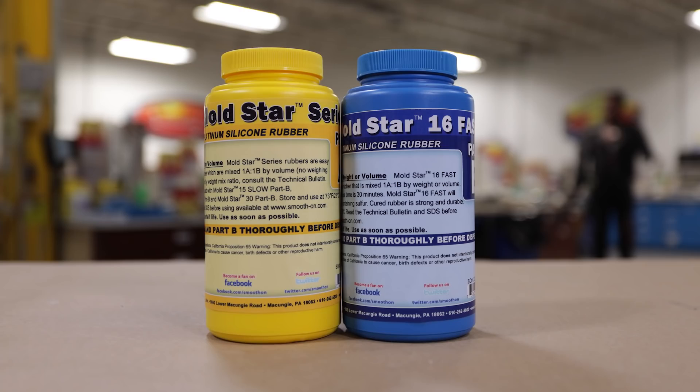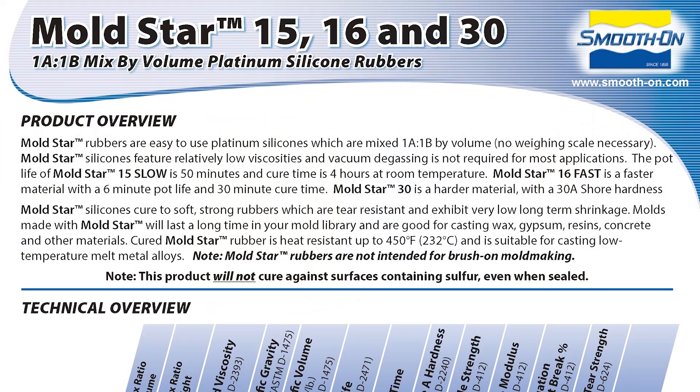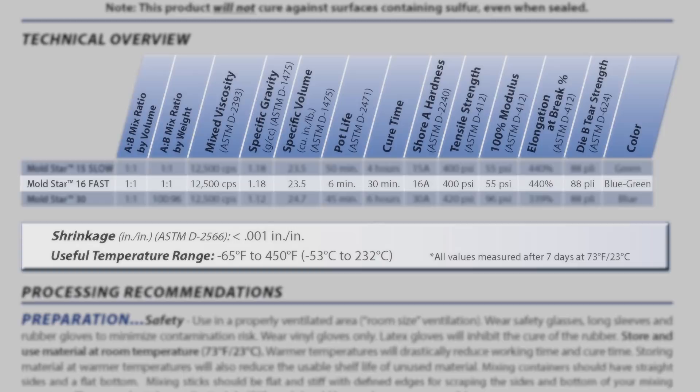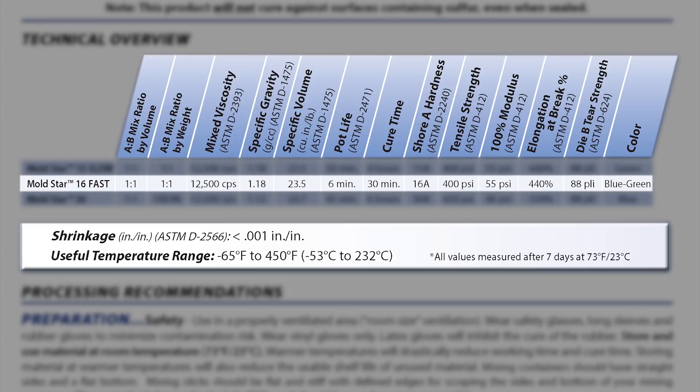The material that we're going to use for the mold itself is MoldStar 16 Fast. As the name says, this is a fast setting product, that's the key of our project here. The working time, the pot life, is about five minutes while a cure is set in 30 minutes. So we have to work very fast to mix this and get it inside of our mold box.